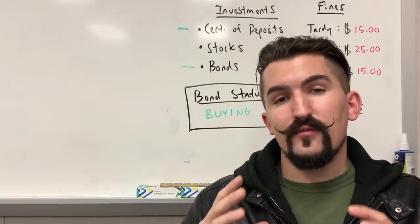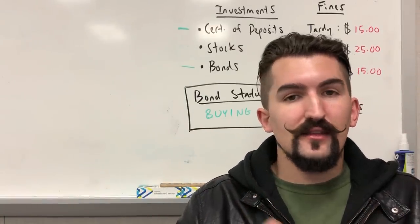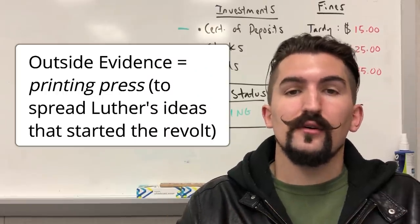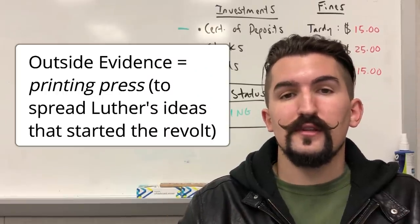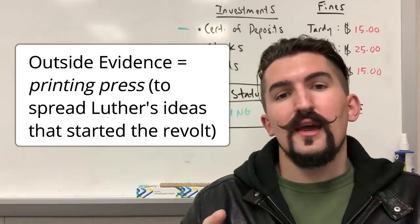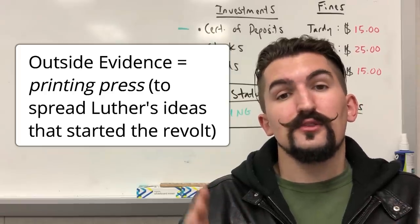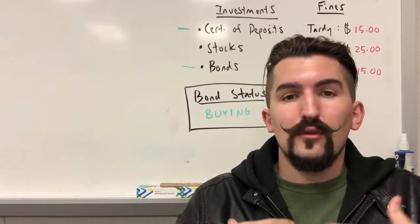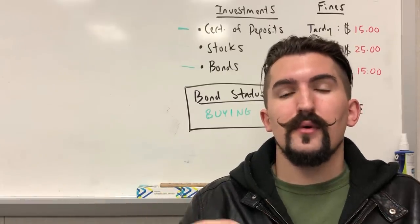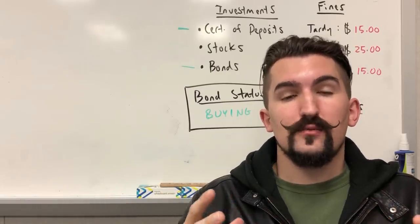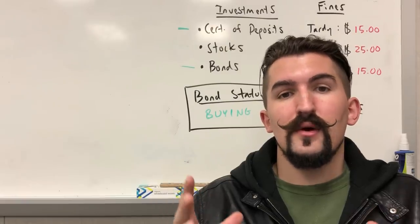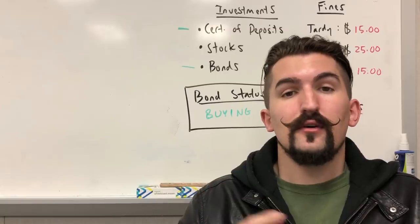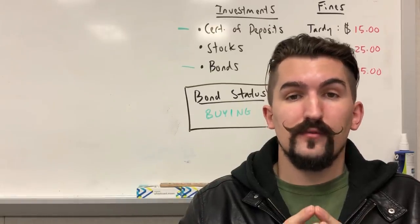The other evidence point is going to come from any historical example you can think of on your own that isn't in the documents and also supports your thesis statement. For example, to get that outside information point, you could use the printing press invented by Johann Gutenberg in the 15th century. You could explain that as a contributing factor to causing the German Peasant Revolts because the printing press got Luther's ideas out and spread throughout Europe, and these peasants were able to get a hold of those ideas, read them, and apply them — contributing to starting the German Peasant Revolt of 1524.